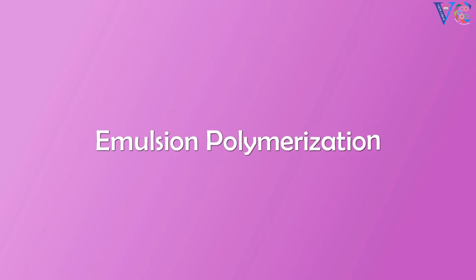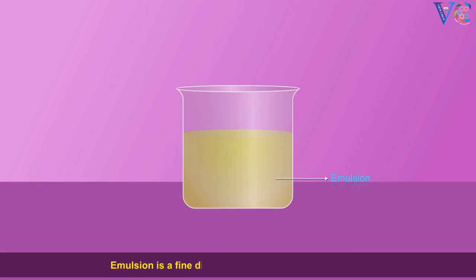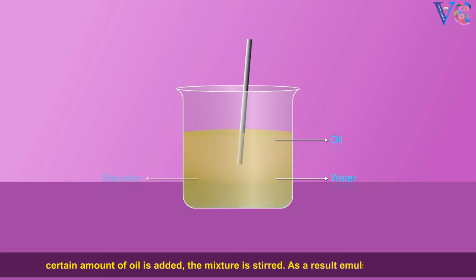Emulsion polymerization. Emulsion is a fine dispersion of two immiscible liquids. For example, into a beaker containing water, certain amount of oil is added. The mixture is stirred. As a result an emulsion is formed.